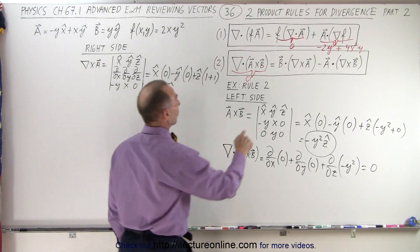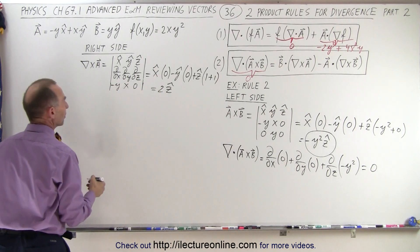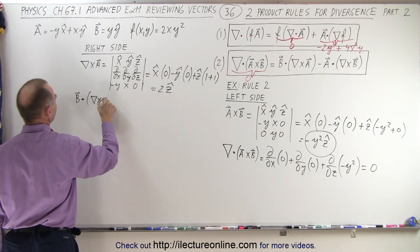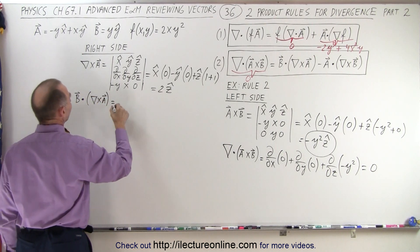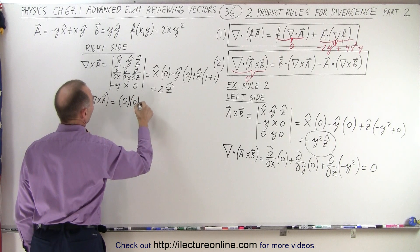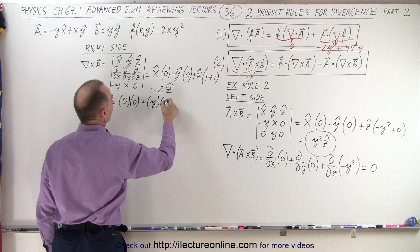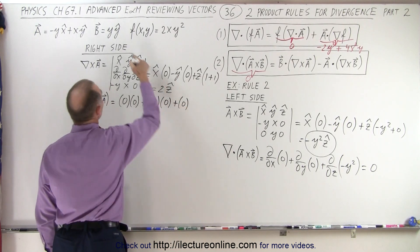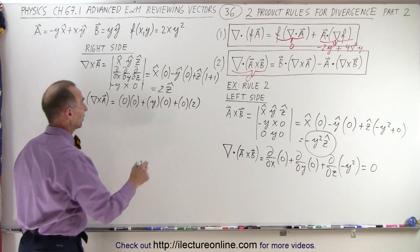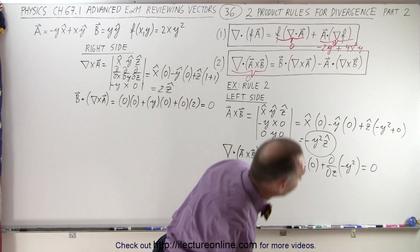Now we take the dot product of vector B with the curl of A. The X component of B is 0 times the X component of the curl which is 0, plus the Y component of B times the Y component of the curl which is 0, plus the Z component of B which is 0 times the Z component of the curl which is 2. It's 0 everywhere, so this equals 0 — the first term on the right side also equals 0.